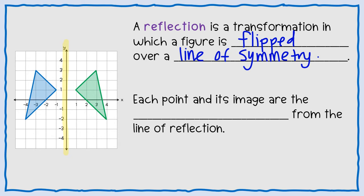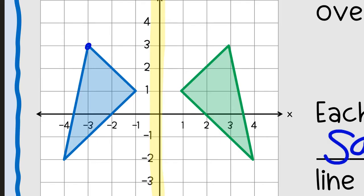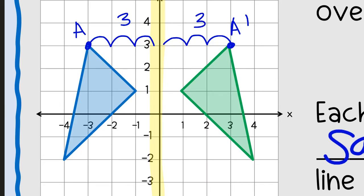The next part says each point and its image are the same distance from the line of reflection. So looking at that image, let's say right here this was A, which means that up here would be A prime. So if I count to the yellow line, this goes three units. So on the other side, A prime is also three units.